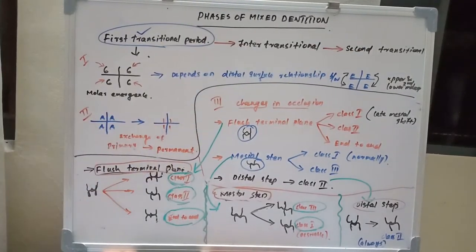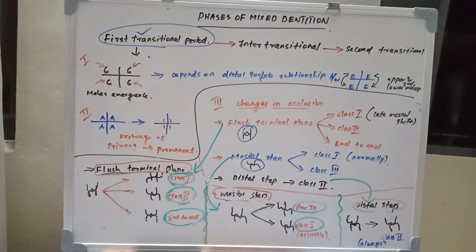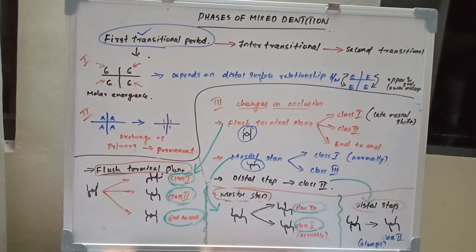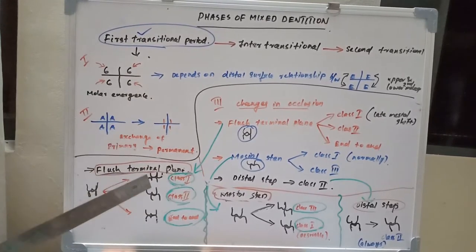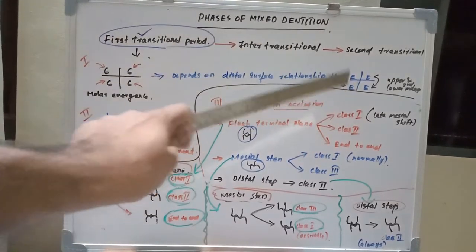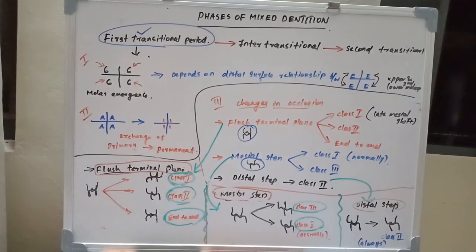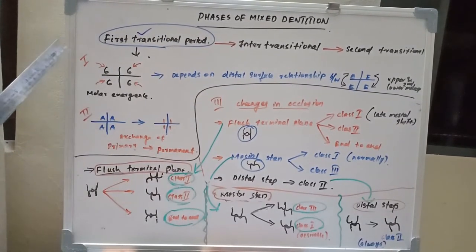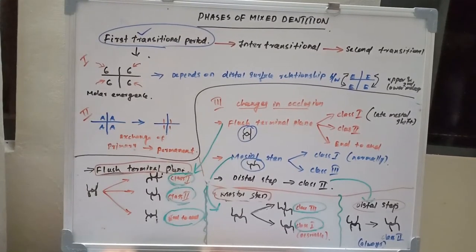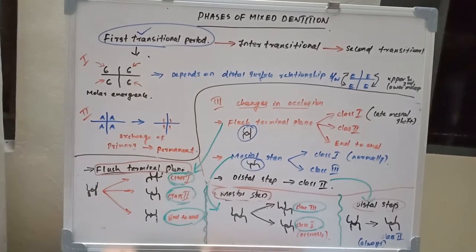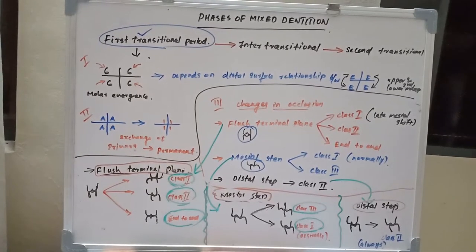Today's session will be about the first transitional period — what changes happen in the first transitional period, including occlusal changes, tooth eruption, and the exchange of deciduous teeth by permanent teeth. So let's move on to the first transitional period.